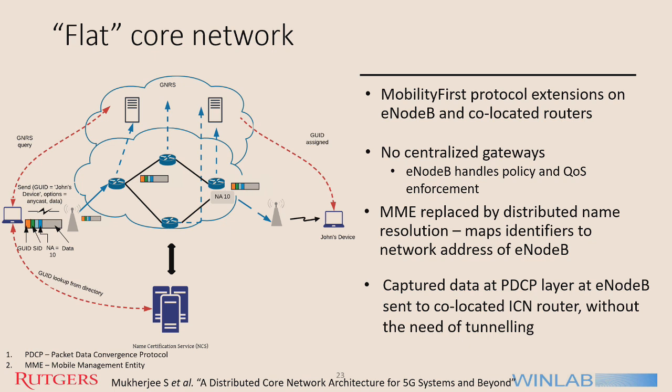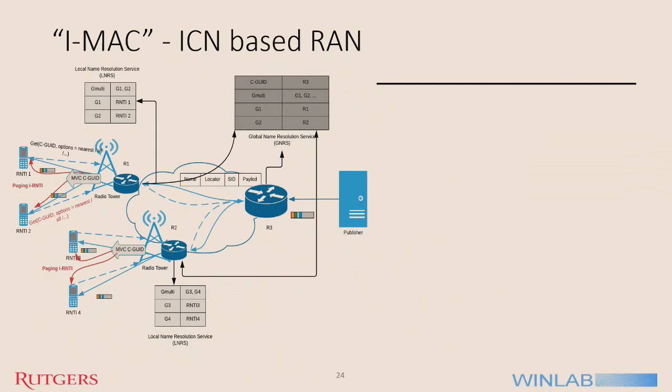The extension to this is IMAC — ICN-based RAN. After the network addresses of eNodeBs are resolved using GNRS, eNodeBs are required to map the content GUID or device GUID with the MAC layer of the requesting UE. This is done using the Local Name Resolution Service (LNRS), which maintains a map of the GUID with the RNTI. This table ties the MAC layer services to the ICN packet — the name-based packet.